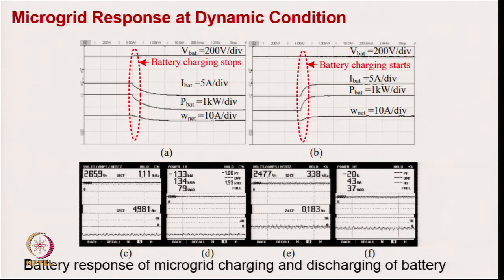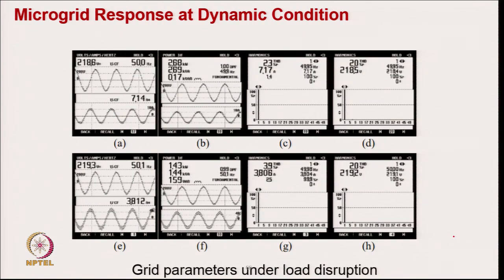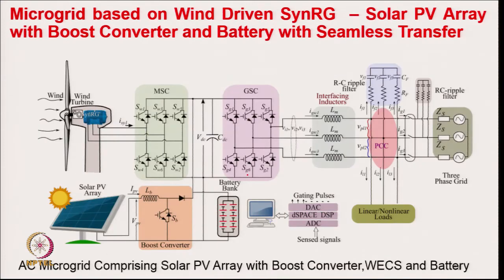The power flow into the battery is shown — battery charging stops when power generation decreases and then battery charging resumes. Power flow into the battery during load change dynamics is also demonstrated. The grid current THD is 2.3 percent with voltage THD of 2.2 percent. For different power generation levels — 2.69 kW and 1.43 kW — the grid current THD remains below 5 percent in all cases.